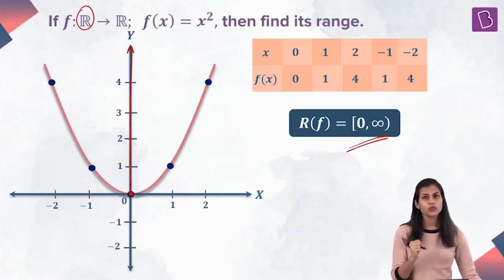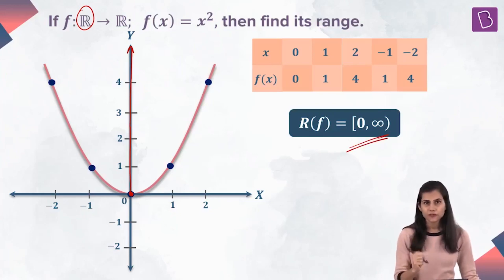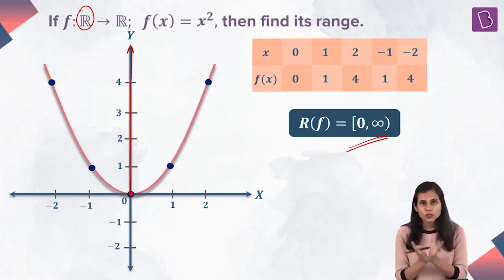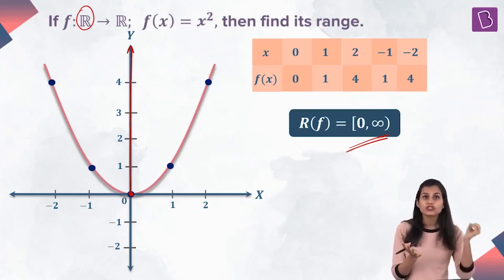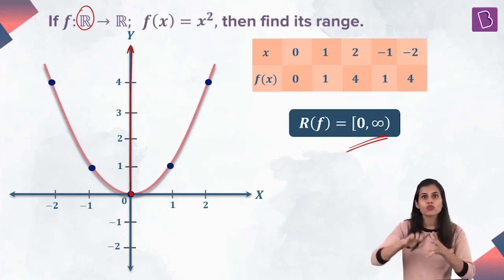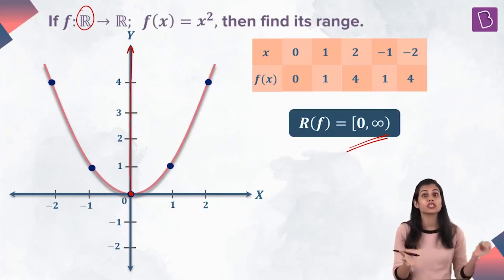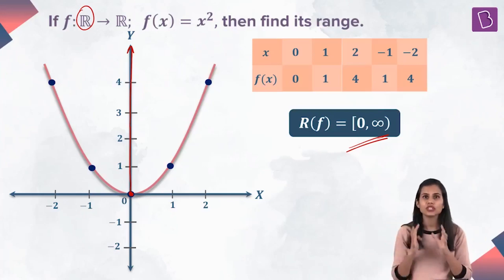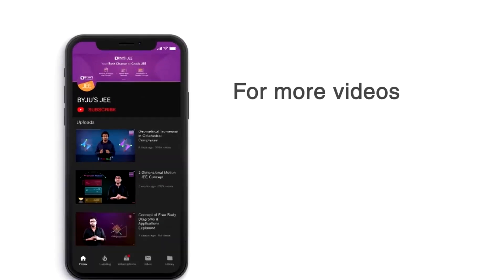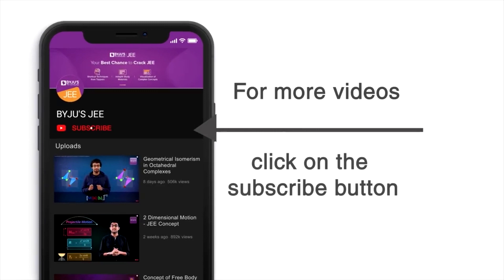This discussion was again made to emphasize that you have the same function — the square function, the same machine — but as you change your inputs, the outputs change correspondingly. That means as you change the domain, the range changes. For more videos and live lectures on the JEE, click on the subscribe button now.